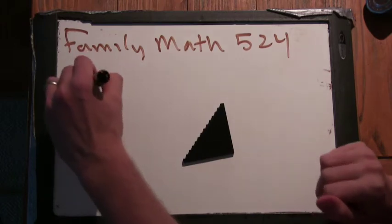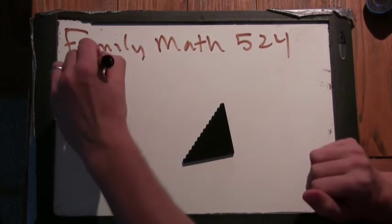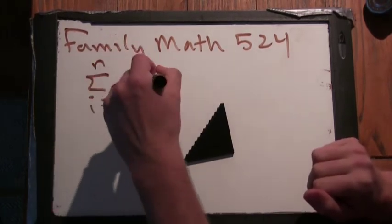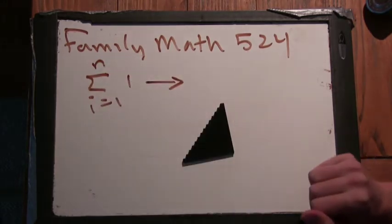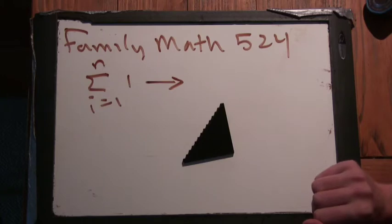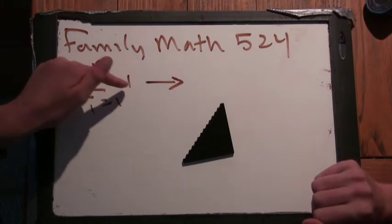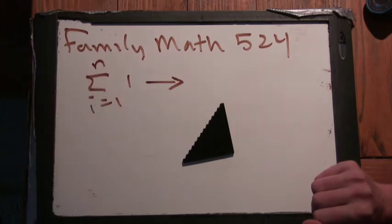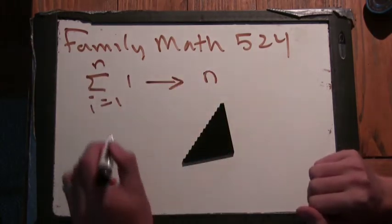So what is the sum from i equals 1 to n of 1? What does that equal? So that's just 1, 1, 1, 1, 1. So it's n. So it's summing up n ones.